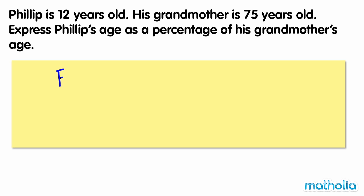First, let's find Philip's age as a fraction of his grandmother's age. 12 over 75 can be simplified to 4 twenty-fifths.